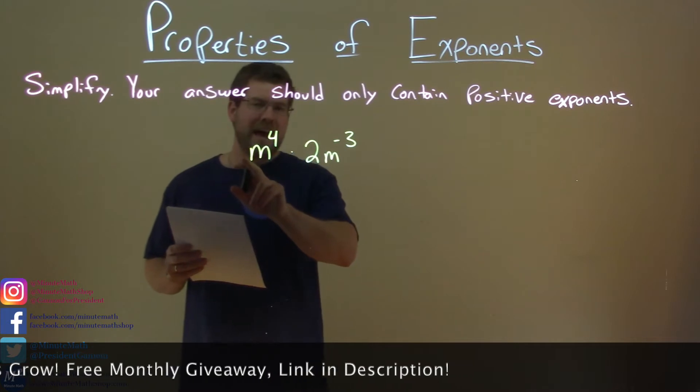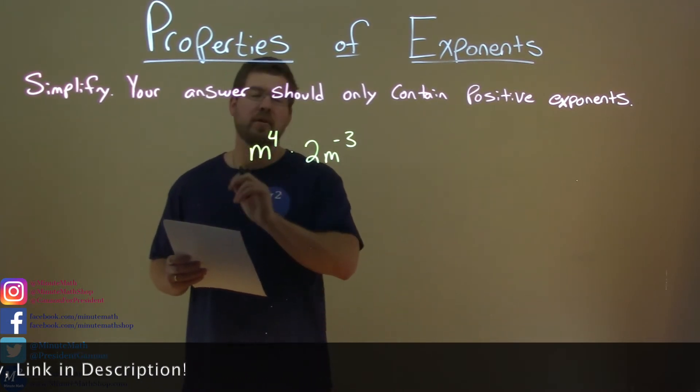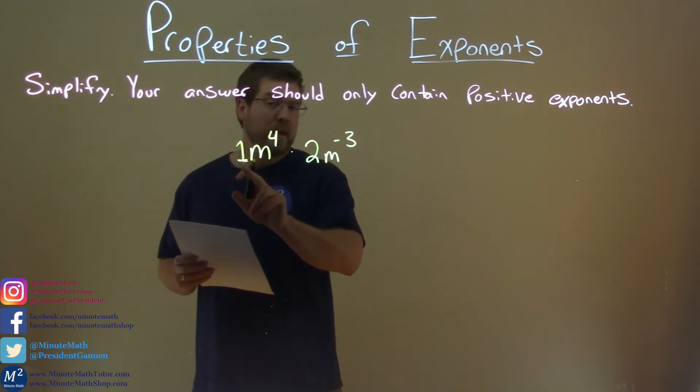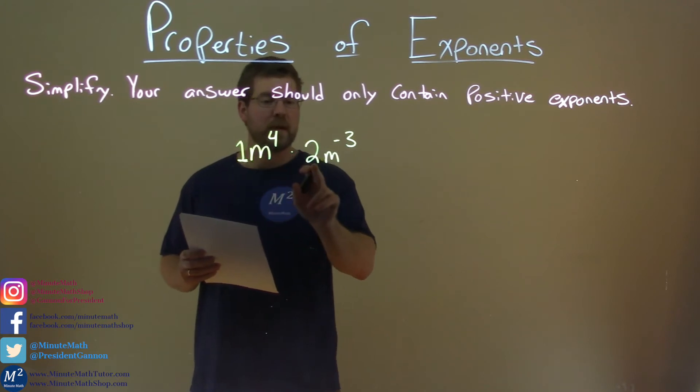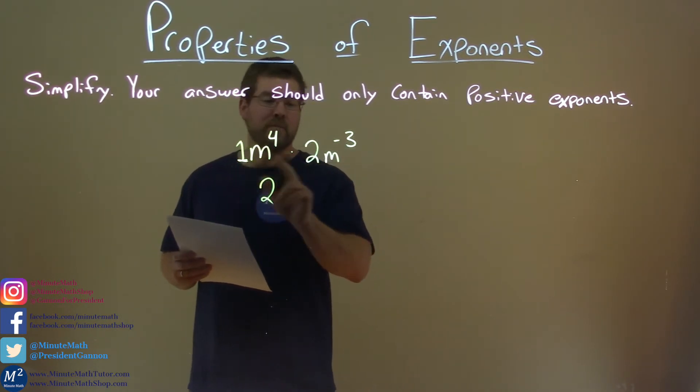What's in front of this m to the fourth power? That is a 1. The coefficient there is 1, so we can put that in if we want. That kind of helps us out here. Now we need to multiply our coefficients. 1 times 2 is 2, so that just comes up front and we're done with the coefficients.